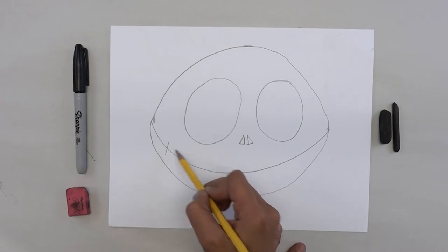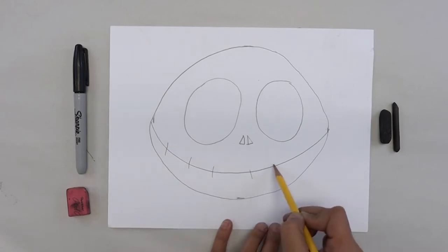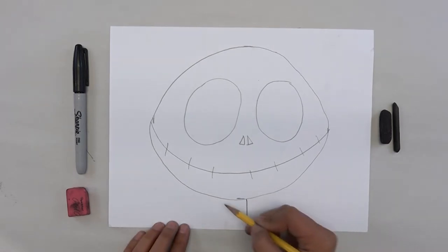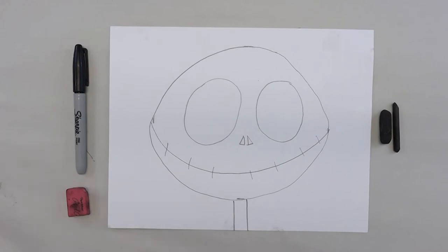And then from here, we're going to draw lines. And for his neck, he has, he's a skeleton, so he has a really skinny neck. And this is what we'll be doing again. This is a great activity for kindergarten through third grade.